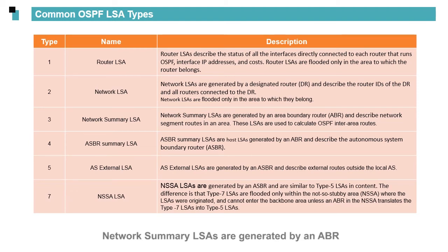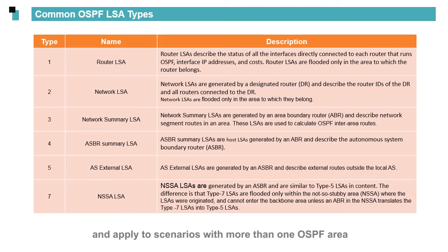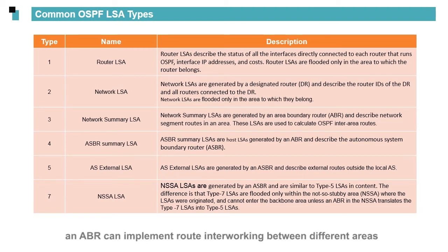Network Summary LSAs are generated by an ABR. In contrast to Type 1 and Type 2 LSAs, Type 3 LSAs describe network segment routes in an area and apply to scenarios with more than one OSPF area. By using Network Summary LSAs, an ABR can implement route interworking between different areas by importing routes from one area to another.